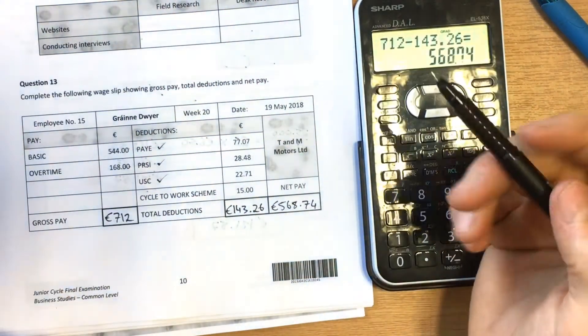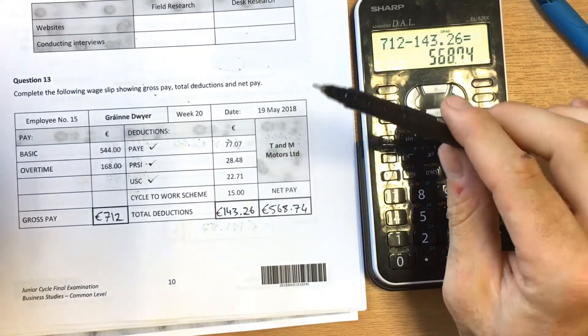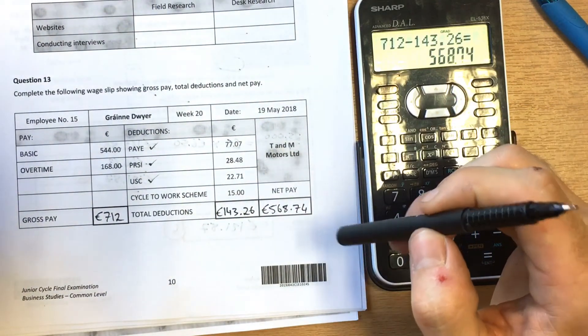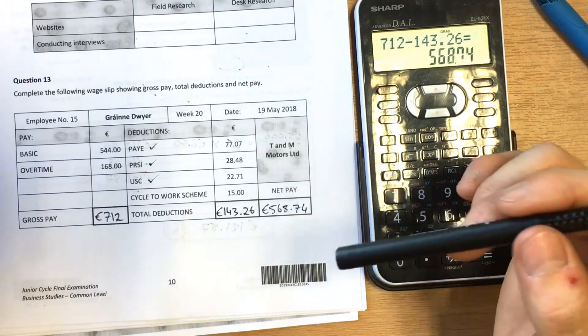That's your basic wage slip and it's probably as basic as it can get. But to be honest, I'm expecting to see one in this summer's exam because this is what they have produced in the State Examination Commission sample paper.